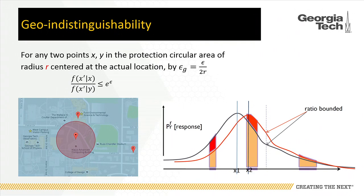The second figure shows the one-dimensional scenario: two close points x1 and x2. The distributions for generated fake locations from these two points are very close. The similarity between the two distributions is ensured by the bounded ratio e^epsilon.